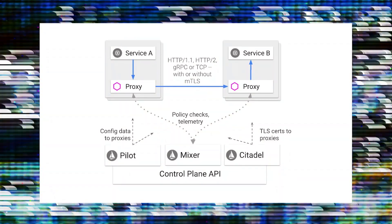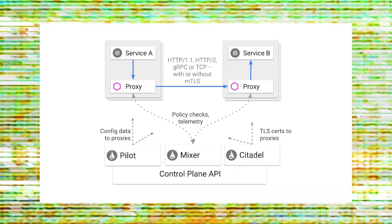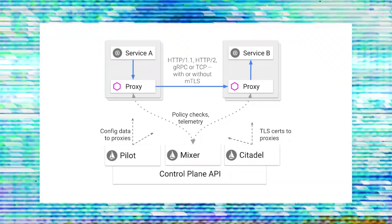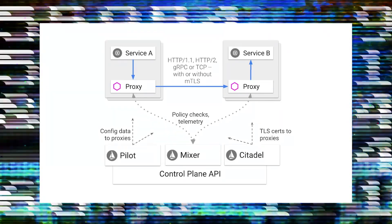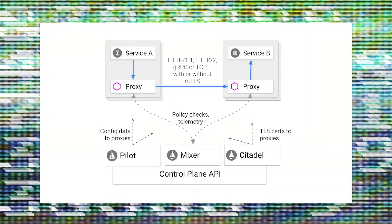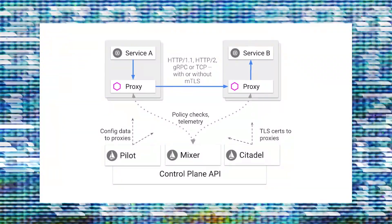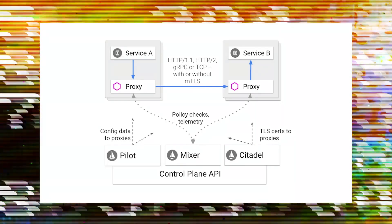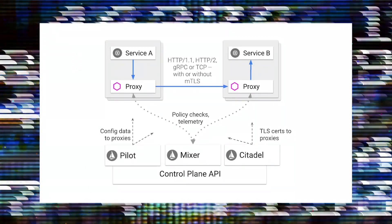Then we have the control plane. The control plane consists of Pilot, which is responsible for service discovery and traffic management. It configures the Envoy proxies with information about the available services and their locations. Mixer enforces access control, usage policies, and collects telemetry data, helping in enforcing policies and collecting data for monitoring and logging.